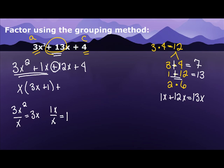And what's in common with 12x and 4? Well, that would be 4. So I'm going to take 12x divided by 4, which is 3x. And I'm going to take 4 divided by 4, which equals 1.